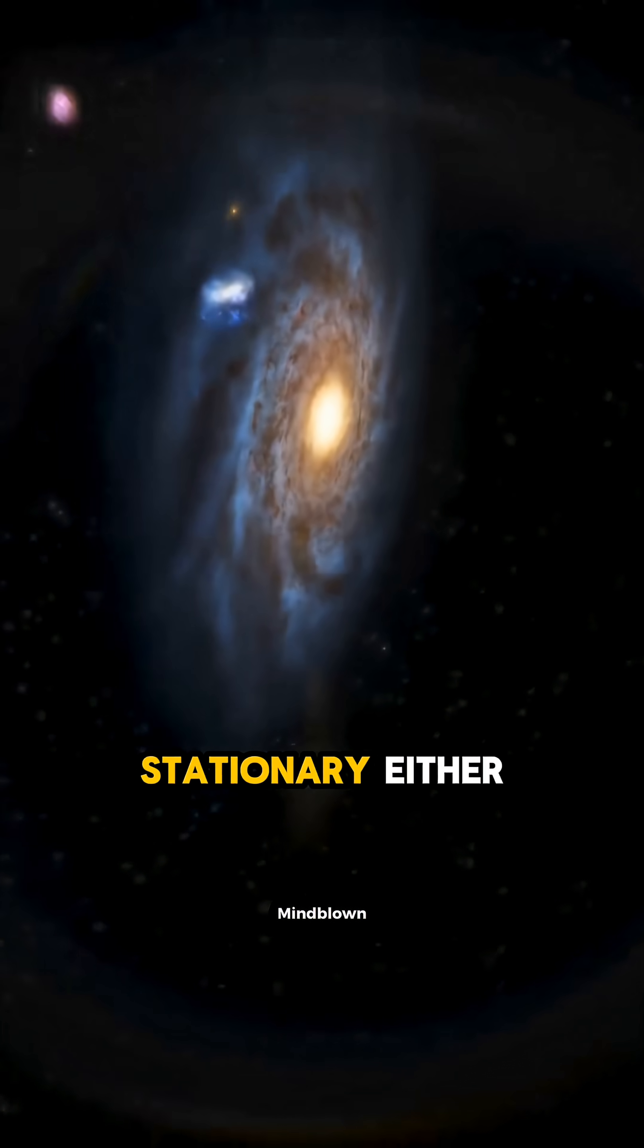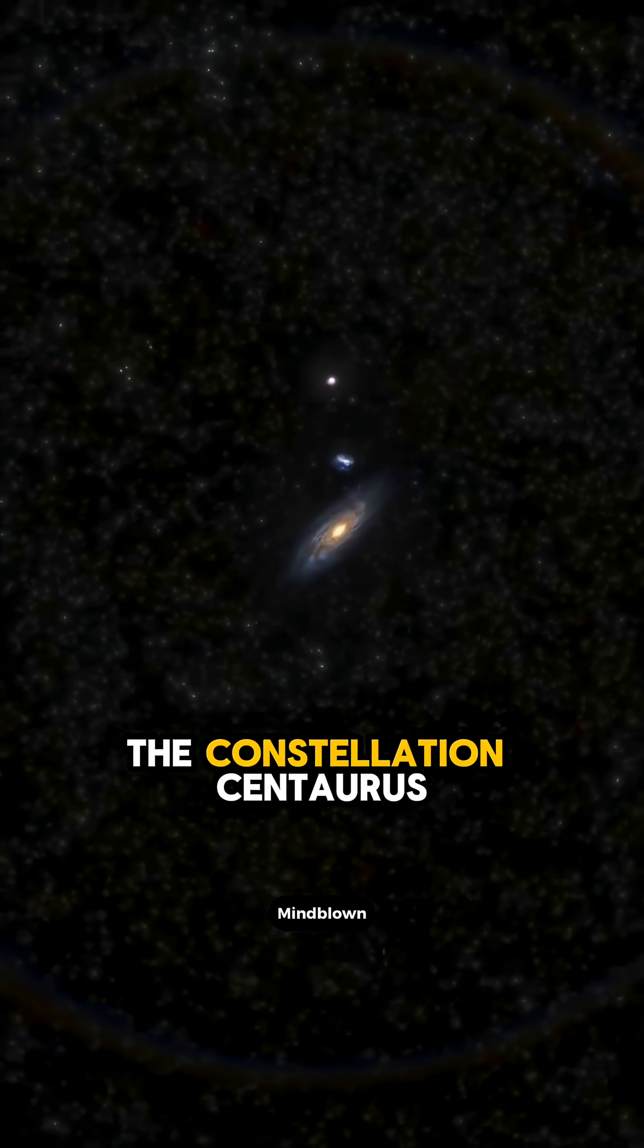And the Milky Way itself isn't stationary either. It's zooming towards the constellation Centaurus at an astonishing speed of 60 to 100 kilometers per second.